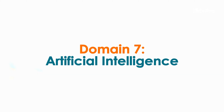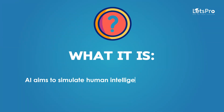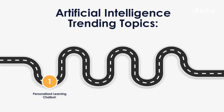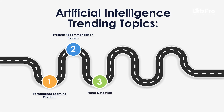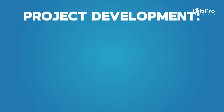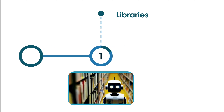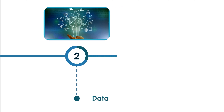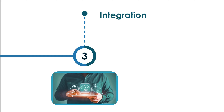Domain 7: Artificial Intelligence. AI aims to simulate human intelligence in machines for decision-making and learning. Trending topics include: a Personalized Learning Chatbot for educational platforms; a Product Recommendation System based on user behavior; Fraud Detection for suspicious transactions; Voice Recognition Systems to control devices; and an AI-Powered Resume Screening Tool to automate candidate filtering for HR. Use TensorFlow or PyTorch for AI models, train on labeled datasets from Kaggle, and integrate the AI model with a web or mobile app.